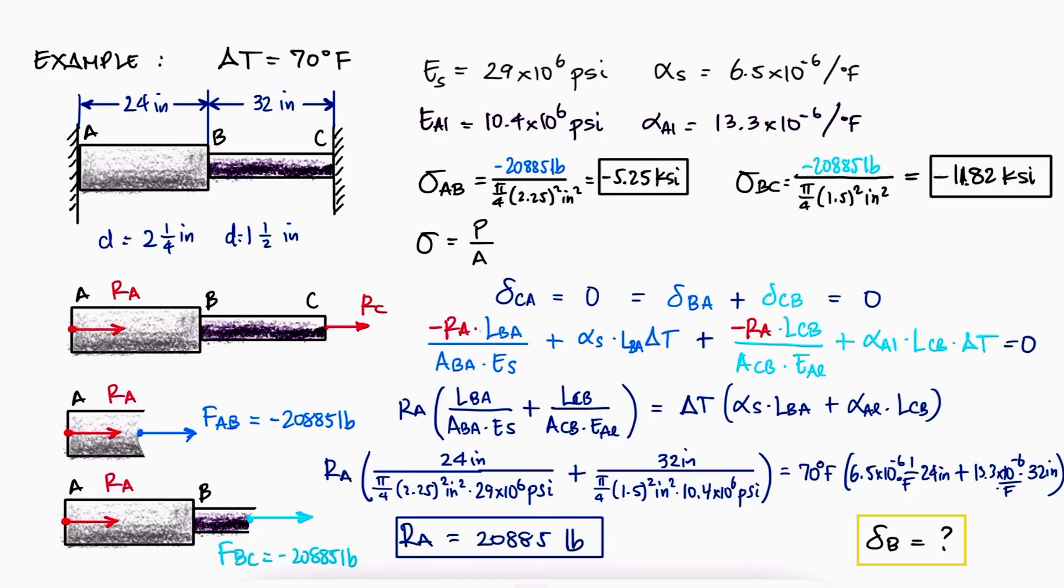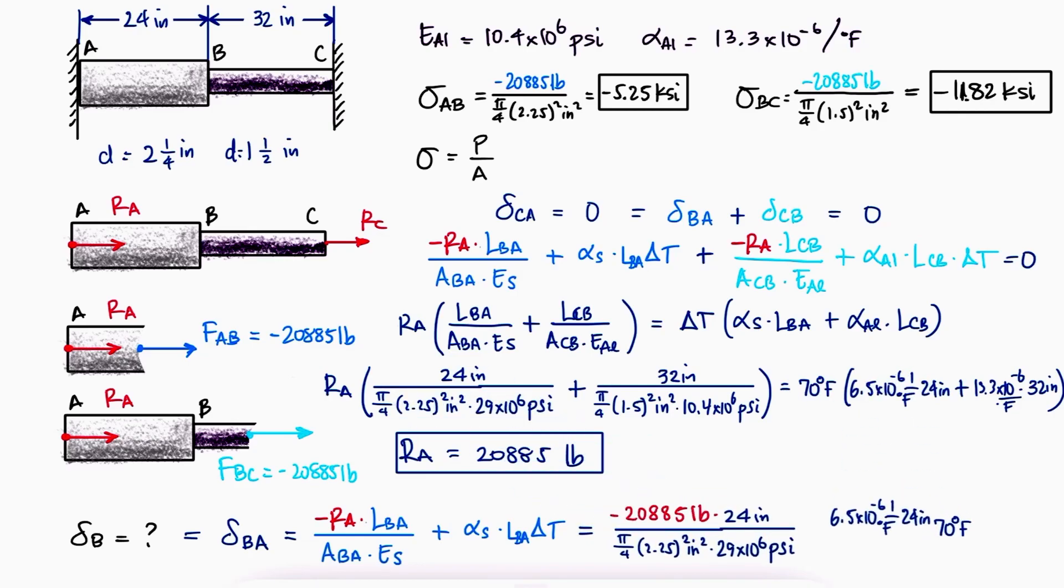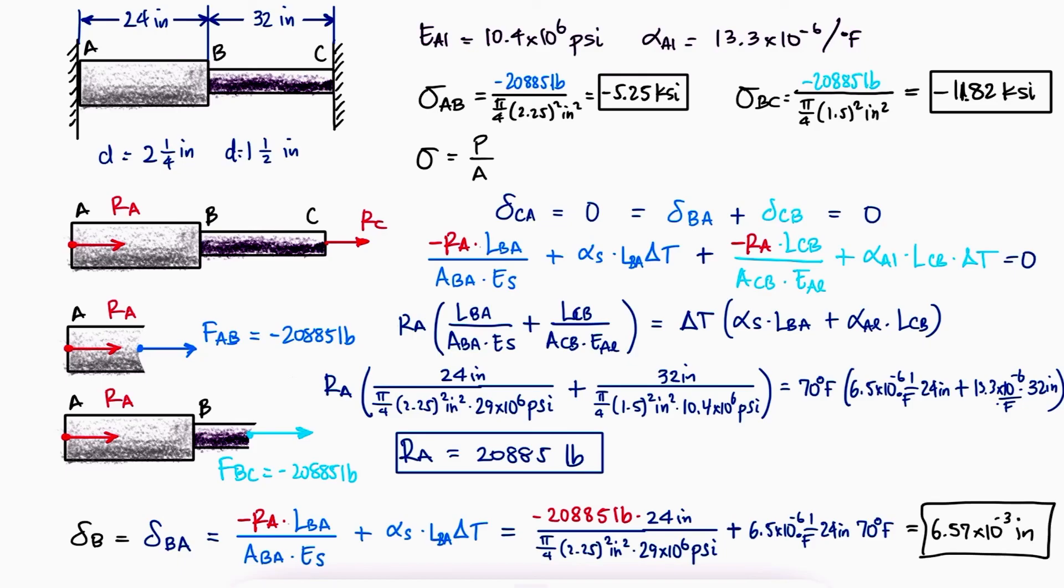To find the deflection of B, we can use the two terms that correspond to the displacement of B with respect to A, since A is the wall and therefore is not moving, substitute the now known reaction at A, and evaluate. This positive value indicates that B moved towards the right.